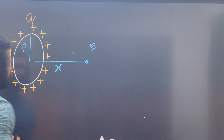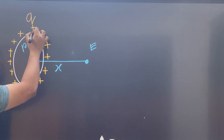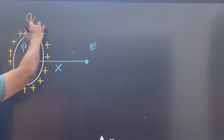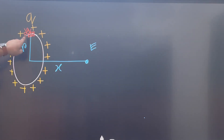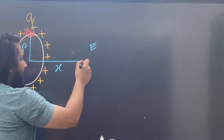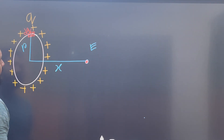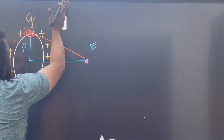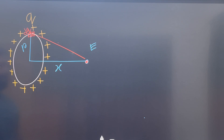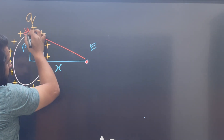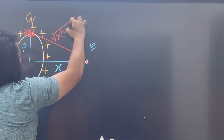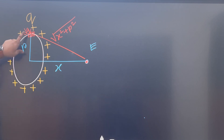Let's see — the ring has a small element dq. The ring is large, so we consider a small element dq. The distance from the element to the point on the axis equals the square root of x squared plus r squared.